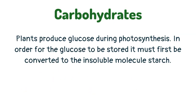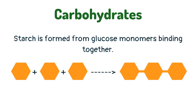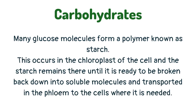Plants produce glucose during photosynthesis. In order for the glucose to be stored, it must first be converted to the insoluble molecule starch. Starch is formed from glucose monomers binding together — many glucose molecules form a polymer known as starch.